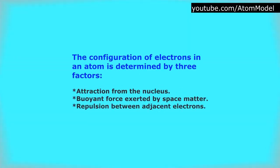The configuration of electrons in an atom is determined by three factors: attraction from the nucleus, buoyant force exerted by space matter, and the pressure between adjacent electrons.